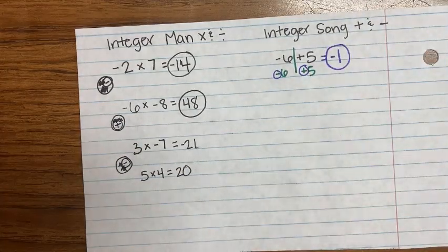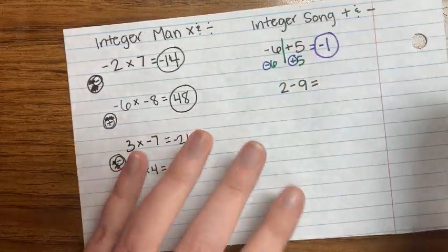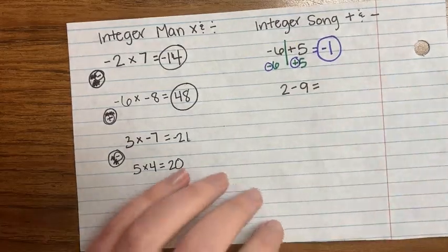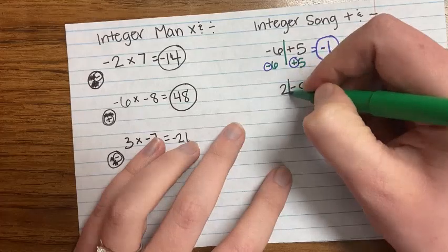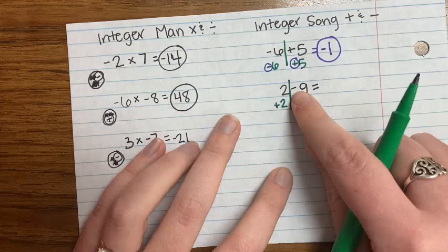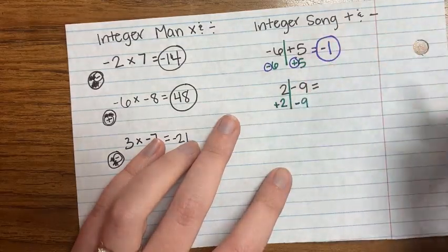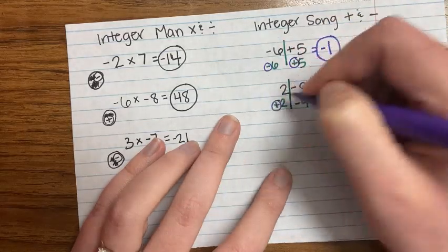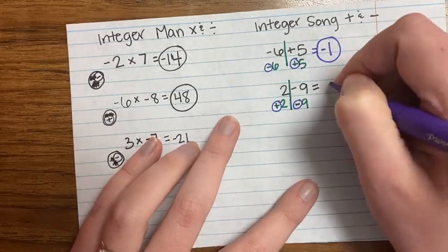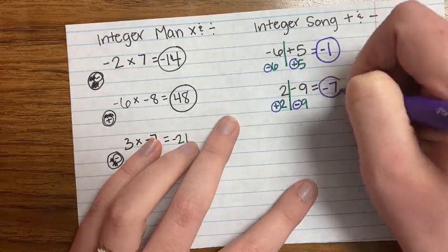The next one is something like 2 minus 9. We can't do that directly because it's going to be a negative. Still draw your line right after your first number. This is a positive 2, and back here this is a negative 9 — if there is a negative back here, it stays negative. Are my signs the same or different? Different. So I subtract: 9 minus 2 is 7. 9 is bigger, so it's a negative. The answer is negative 7.